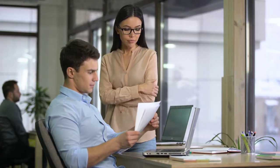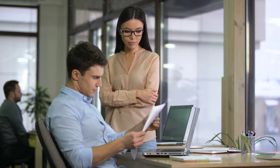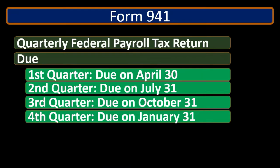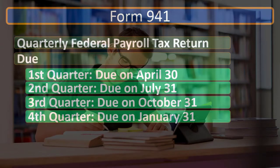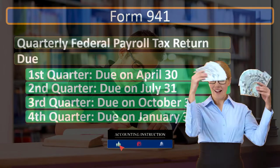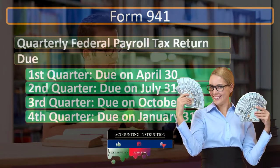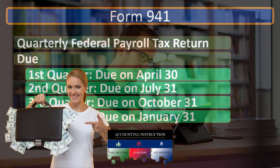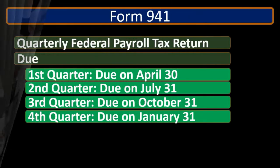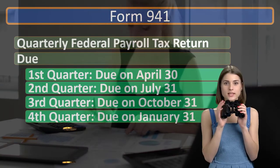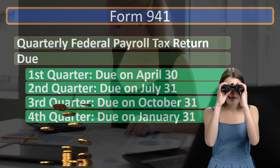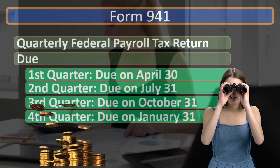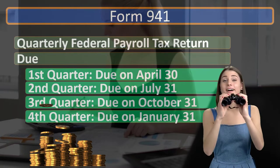Form 941 reports payroll taxes for both employer and employee. When we record payroll taxes on the income statement as payroll tax expense, we typically just think of the employer portion. The employee portion is included in payroll expense because it's really payroll expense earned by the employee — we're paying that portion to the government rather than to the employee, although the employee earned it.